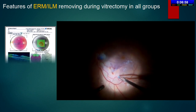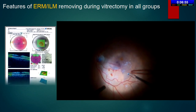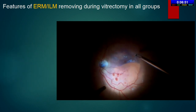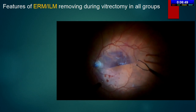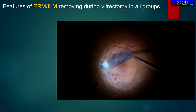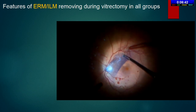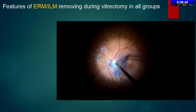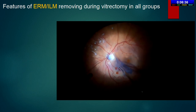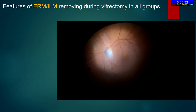In the second group, all membranes were removed as a single block with the ILM. You can see it clearly because of the adhesions on the retinal surface. In this case, it is quite impossible to remove these membranes separately from the ILM because of really strong adhesion, even in this group of patients.